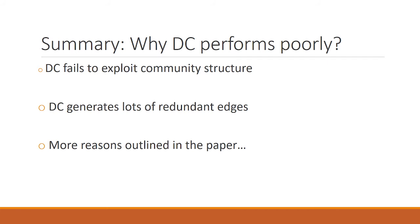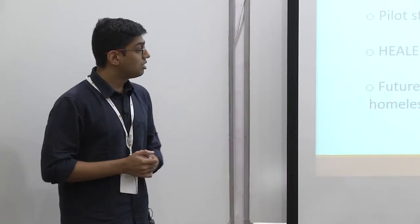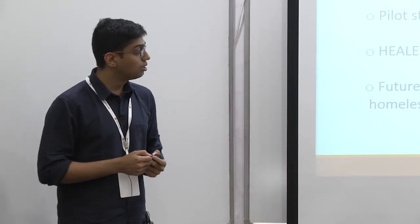There are some other reasons outlined in the paper. To summarize, we developed AI-based algorithms to spread awareness about HIV amongst homeless youth, tested them in the field with actual homeless youth, and saw they perform much better than the current approach, which is degree centrality. We are starting a much larger study with 900 homeless youth. Thank you.